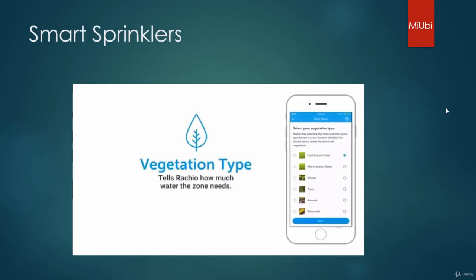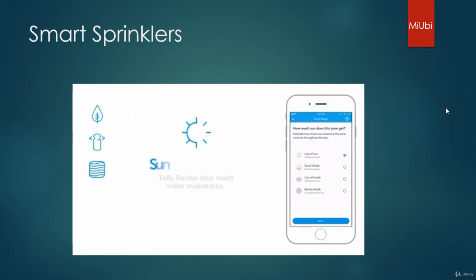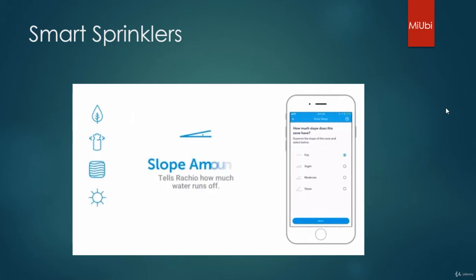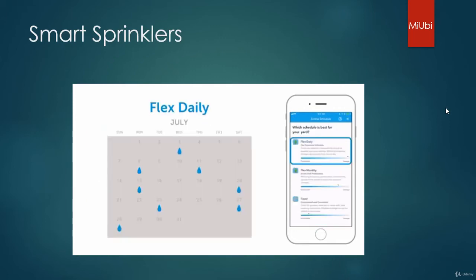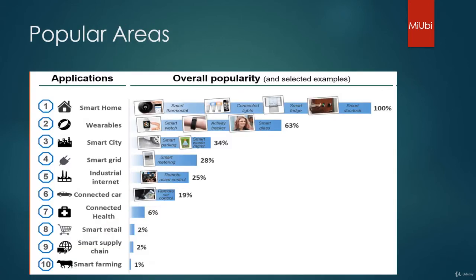One more application is a smart sprinkler. When you input data like vegetation type, sprinkler type, soil type, sun exposure, and slope of your farm, it can schedule your sprinkling times and suggest what kind of sprinkling should be done for that type of farm and at what frequencies you need to sprinkle.